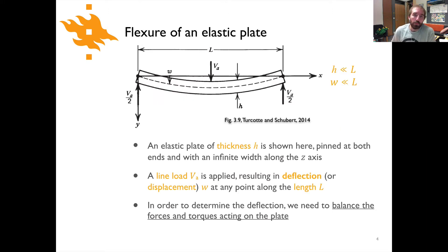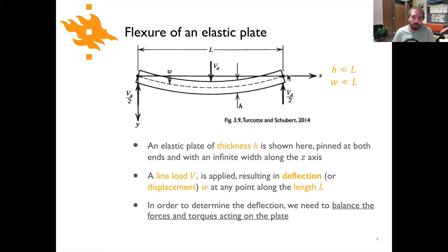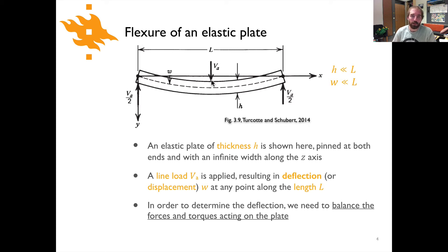Returning to our picture of flexure of an elastic plate from the previous lecture, I want to remind you of a few things. The plate has a length L, indicated along the top. It's pinned at either end (shown by the dots) at y = 0, and it's acted upon by a line load V_A that runs the full length of the plate and is positioned at the center with respect to the two pinned points along the x-axis.